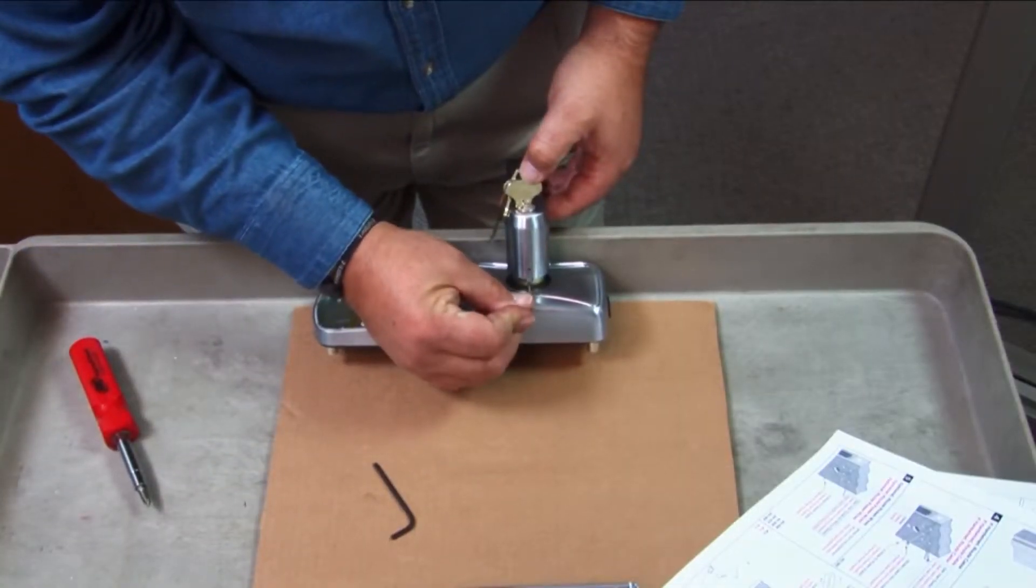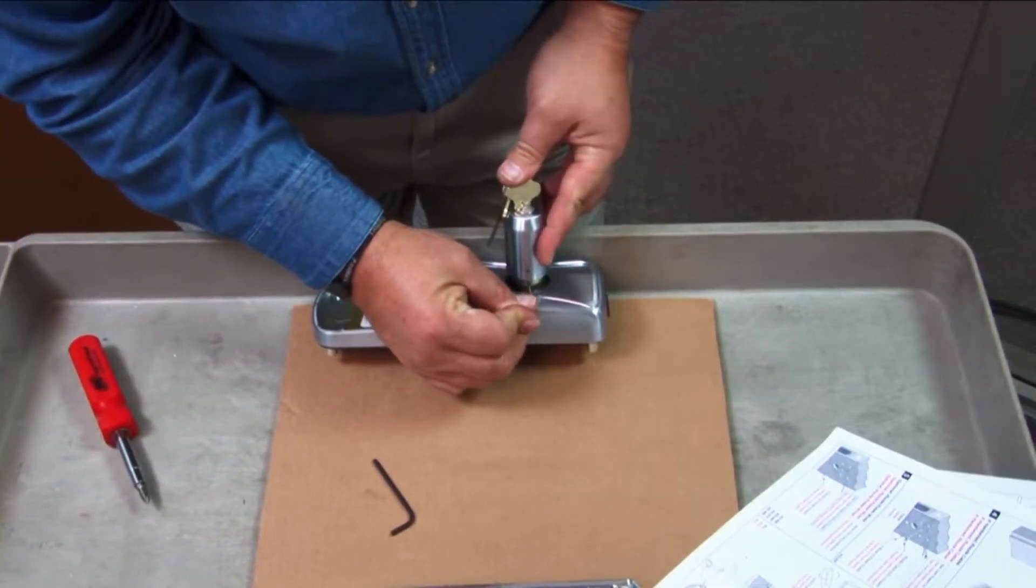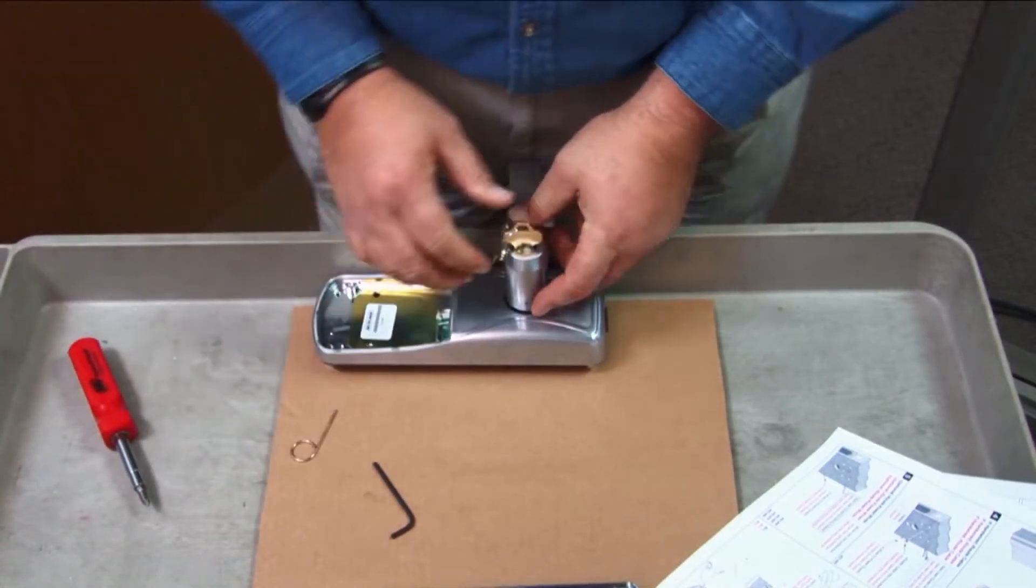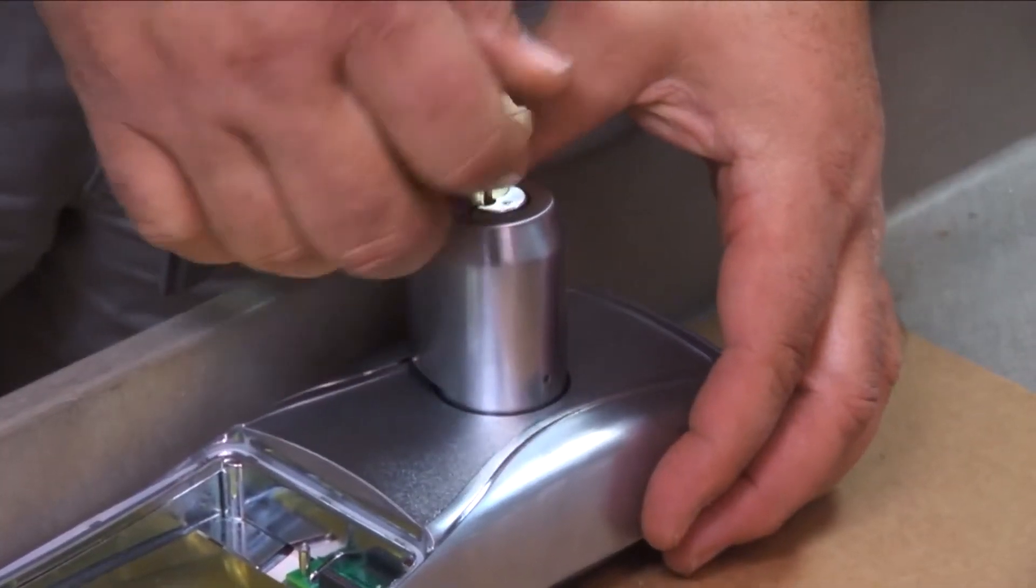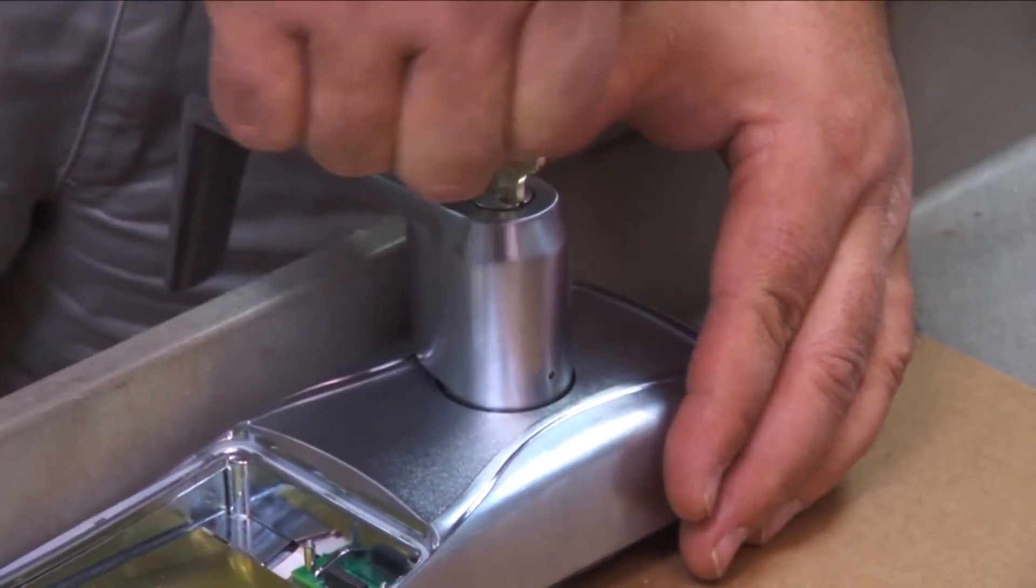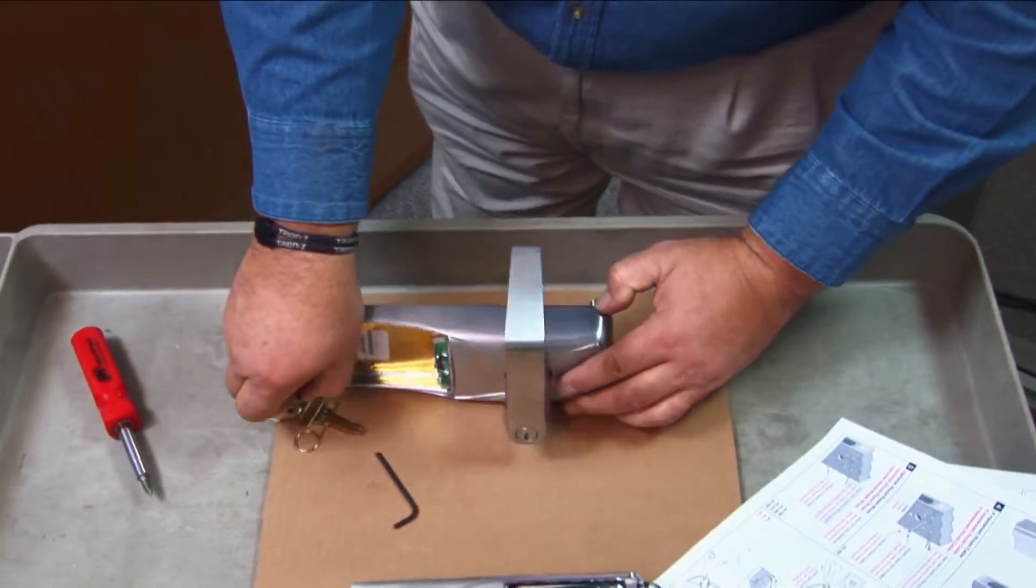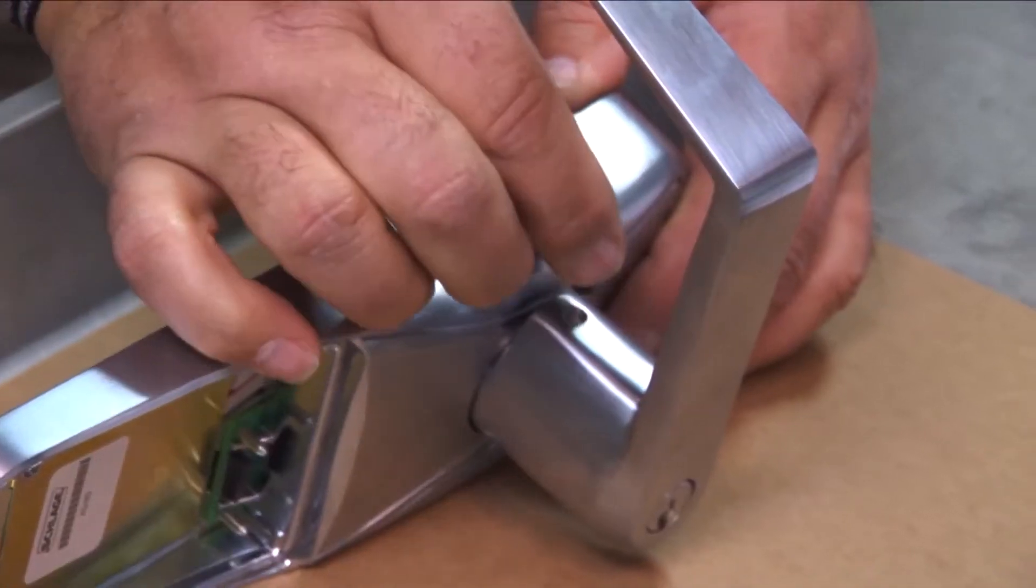Depress the knob stop using the lever removal tool until the lever has passed the knob stop and you hear a click. Check the lever and cylinder have seated correctly by turning the key and removing the key from the lever. Insert the black set screw into the shank of the lever and tighten.